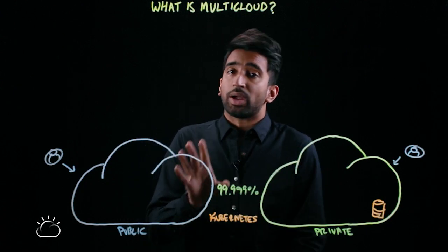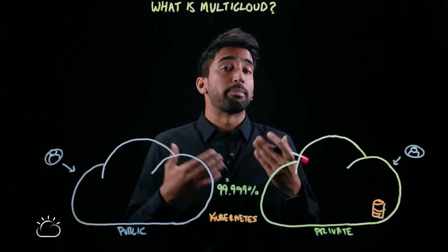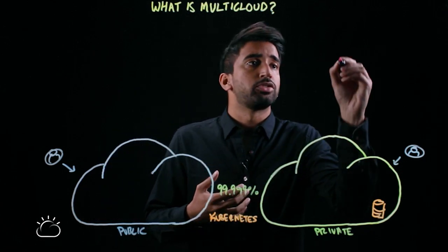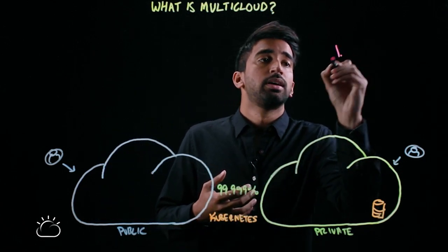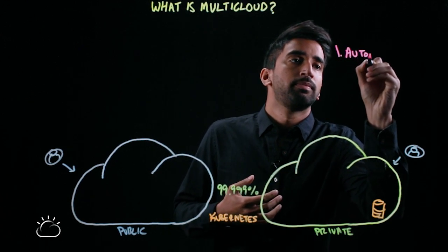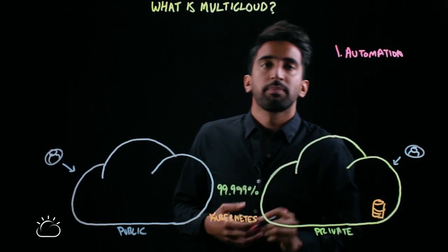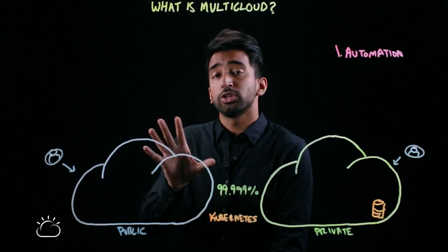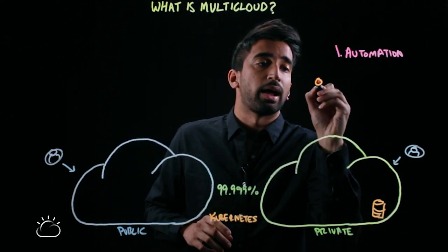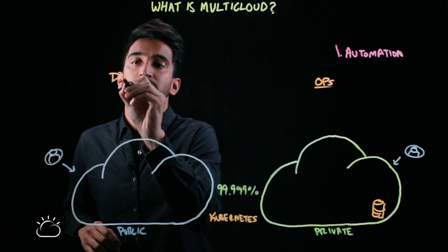There are three major things you want to tackle when taking on a multi-cloud strategy, and I'm going to introduce these as three pillars. The first one is going to be automation. To do this, let me introduce two different types of users: ops and devs.